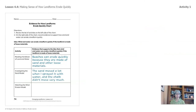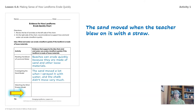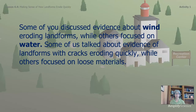Our third activity was watching the sand model with wind. The sand moved when the teacher blew on it with a straw. Some of you might have written about seeing the sand flow over the hump as it created a little dip — what we call a divot. Some of you discussed evidence about wind eroding landforms while others focused on water. Some talked about evidence of landforms with cracks eroding quickly while others focused on loose materials. This is all important information to consider when we write our explanations.